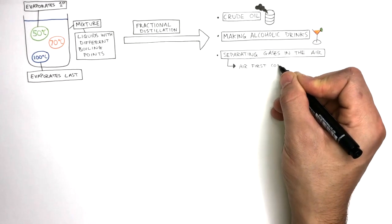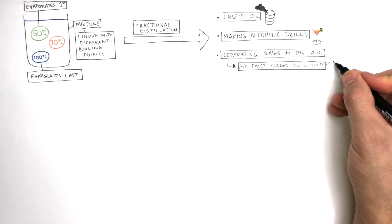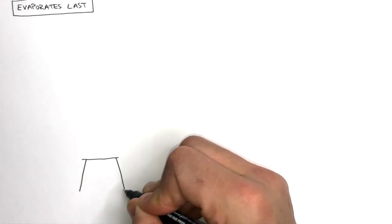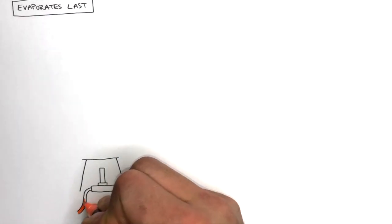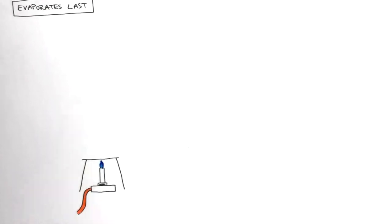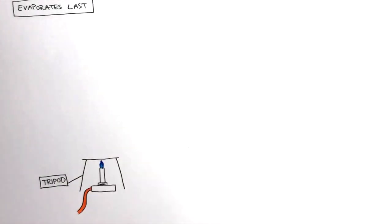To do this, air is first cooled to a liquid at around minus 200 degrees C. We're now going to focus on how fractional distillation is used to separate a mixture of liquids with different boiling points.